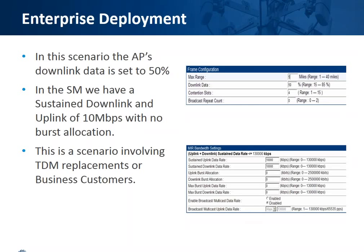In an enterprise setup — for TDM replacements, business-to-business customers, municipalities, or anyone wanting symmetrical service — in the access point we set 50% for uplink and downlink data. So on a 100 meg AP, 50 megs would be allocated going down and 50 megs coming back up. In the SM, we have a sustained downlink and uplink of 10 megs with no burst. This is typical for leased line replacements or smaller bandwidth circuits to business customers where they just want a constant sustained rate.